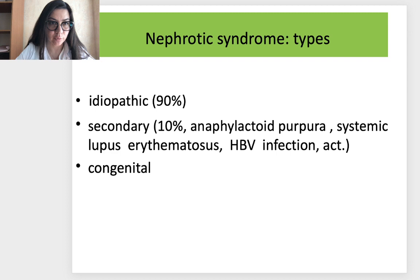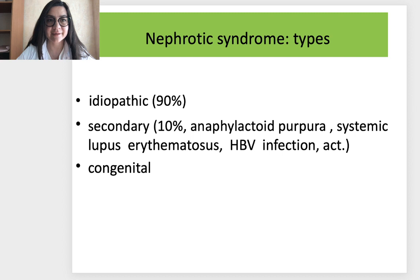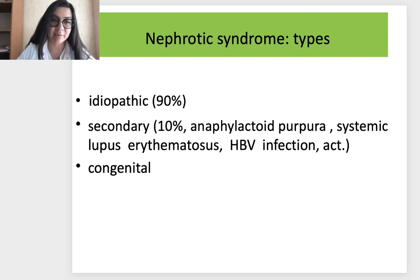Types of nephrotic syndrome: in nearly 90% of all cases, it is idiopathic nephrotic syndrome — we can't find any cause. In 10% of adults, it is secondary to other disorders, most often anaphylactoid purpura, systemic lupus erythematosus, or hepatitis B virus infection. Nephrotic syndrome can also be congenital, which is very important in pediatrics.